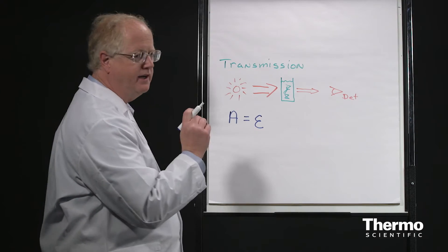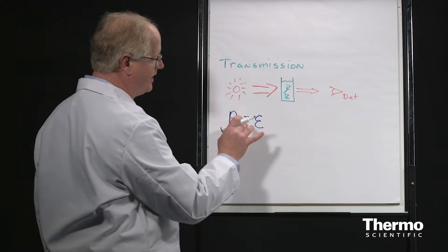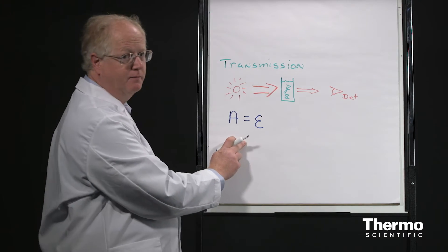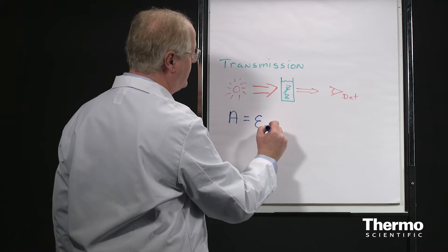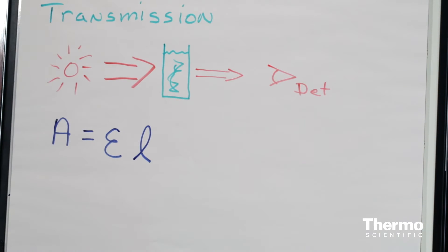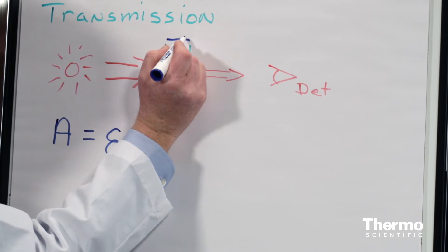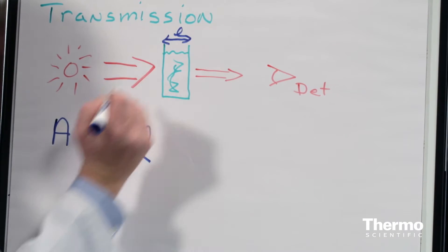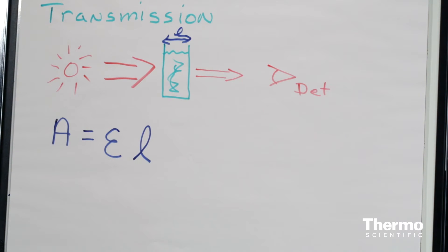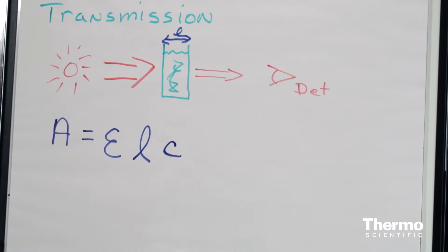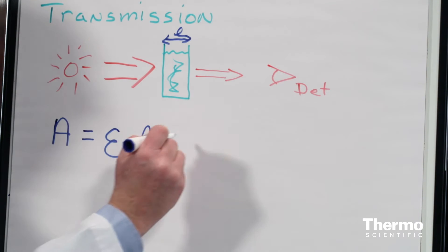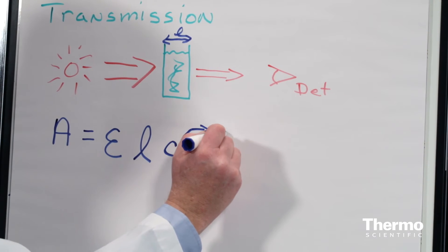So this is unique to each molecule and unique to each frequency. This is where the spectrum comes from—this is defining the spectrum, the absorption as you go across. The second parameter is L, the path length, which is the length through which the beam passes containing the sample. And then finally, the third parameter is C, the concentration of the material that's in there.